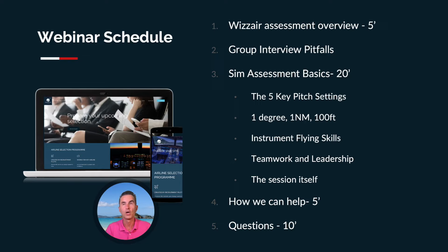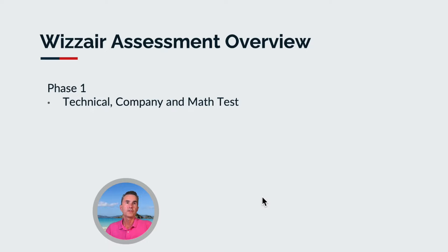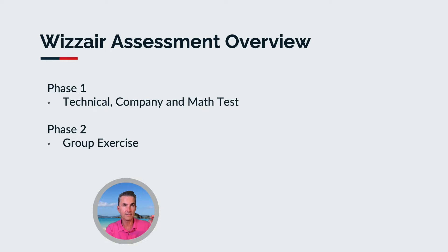We'll get into how we can help with solutions if you want to go further. Today's presentation will increase your chances quite a bit. So let's talk about the Wizz Air assessment overview. First, you'll have a technical, company, and math test — a multiple choice questionnaire. You need to work on this. Go to pilotassessments.com and work through their multiple choice questionnaire. Then you have the group exercise. Those who pass phase one go to phase two, and the group exercise is eliminatory.